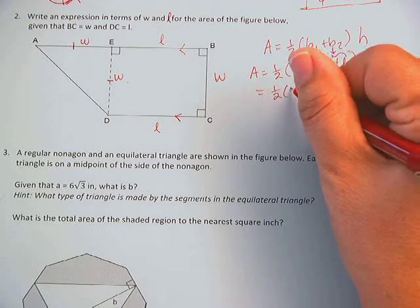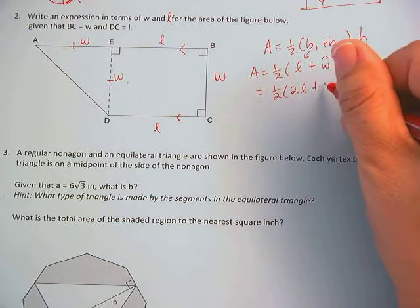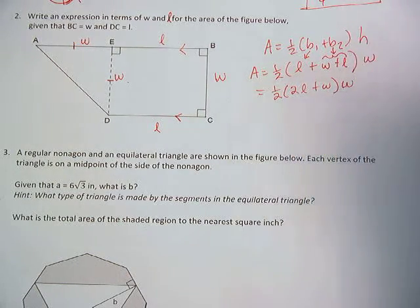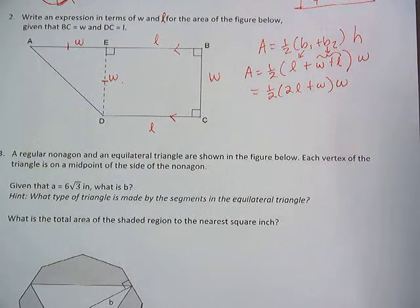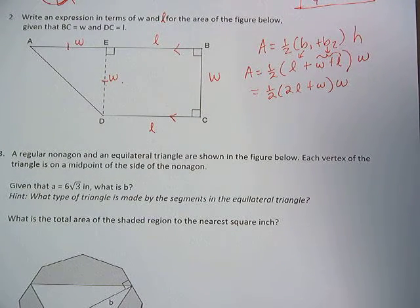So it's one-half times (2L plus W) times W. And guess what? Believe it or not, that's pretty much it. You could multiply the one-half through. I don't see a lot of benefit to it. So you're kind of done.